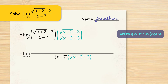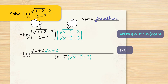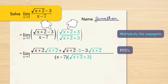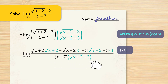The next part is slightly trickier. We have to be very meticulous in expanding the numerator; the denominator we just keep factored. Foiling the numerator: the first terms are square root of x plus 2 times square root of x plus 2. Outer terms: square root of x plus 2 times 3. Inner terms: negative 3 times square root of x plus 2. Last terms: negative 3 times 3. We leave the denominator factored. Now we simplify — notice that the middle terms cancel, which is why we multiply by the conjugate.